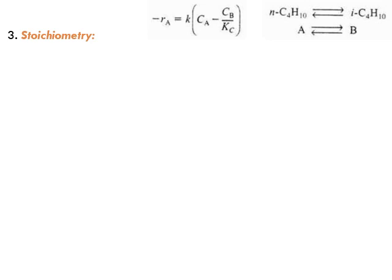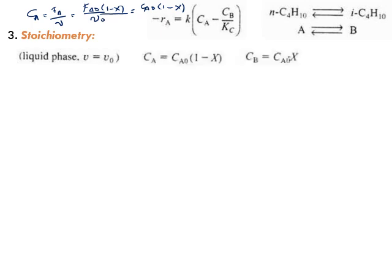Now, we are ready to go to stoichiometry. We need to write CA as a function of conversion and also CB. CA equals FA over epsilon. It's a liquid phase reaction, so you can assume epsilon equals epsilon0. FA equals FA0 times (1 minus X), which gives you CA0(1 minus X). You can do the same for CB.